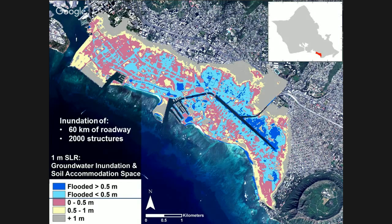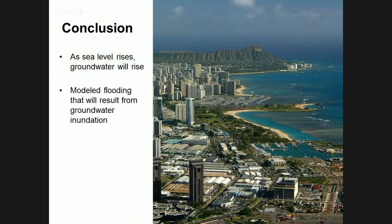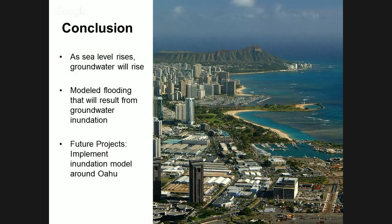In conclusion: we've answered our first question — as sea level rises, groundwater will rise by the same amount at the same time. For question two, we've identified which areas across our study area are at risk and will flood first. In the future, we plan to take this model and implement it in different places around Hawaii. Thank you.